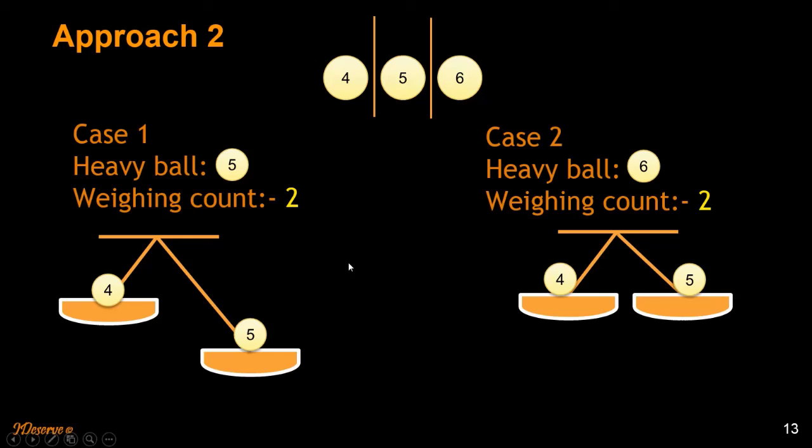So the number of weighing counts that we are going to do for this approach is only two. Initially we divided up the set of balls into three parts, and then we found a group of three. Once we have a group of three, we have to use the balance only once to find out the heaviest ball. These are the two cases. And that's it. We can find out the heaviest ball in two weighings. That's the answer of this puzzle.